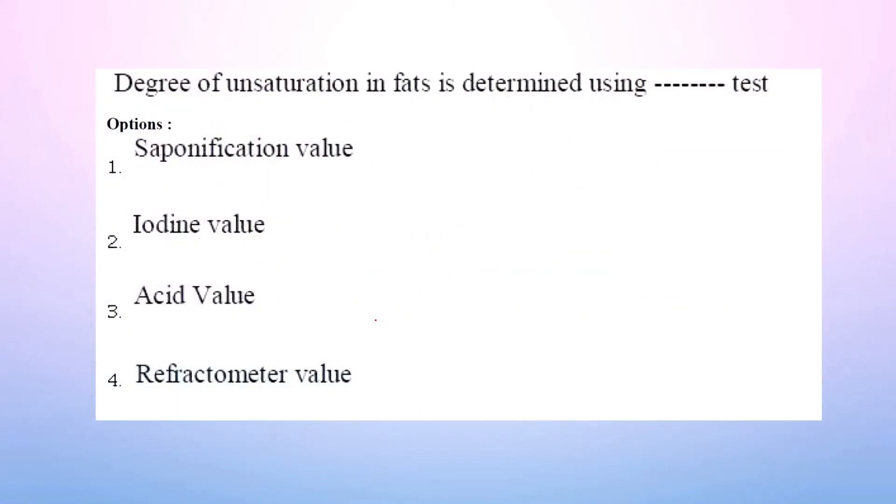Next question: Degree of unsaturation in fats is determined using dash test. Options: saponification value, iodine value, acid value, refractometer value. The correct option is iodine value. Iodine value determines the degree of unsaturation in fatty acids.